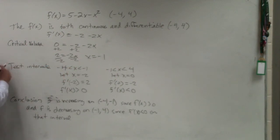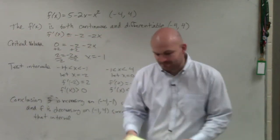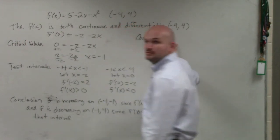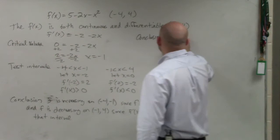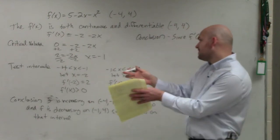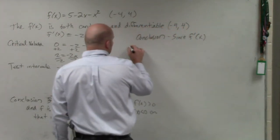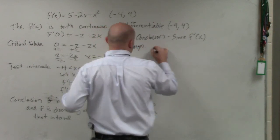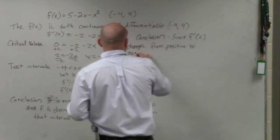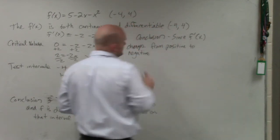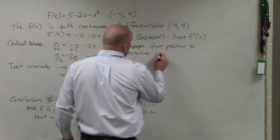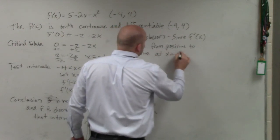If you guys remember on that last problem I just said oh hey look, it's going from positive to negative, right, therefore it's a relative max. We don't want to write it like that though. So we're going to want to say, so finishing my conclusion over here, since f prime of x, let's see, it goes from positive to negative. Since f prime of x changes from positive to negative.